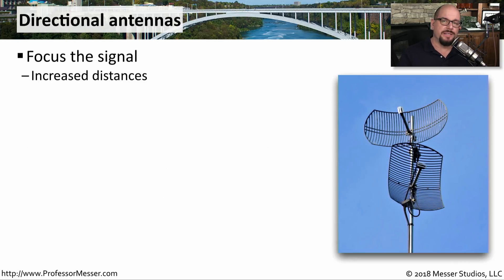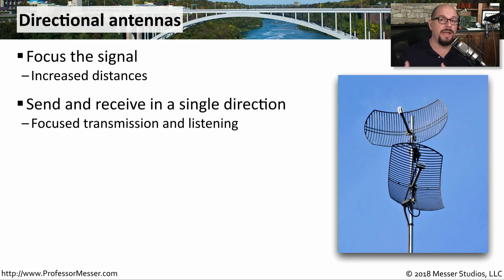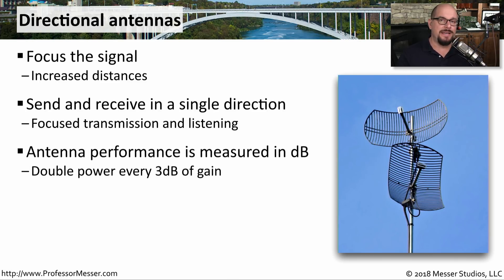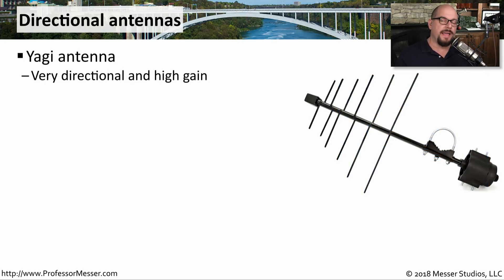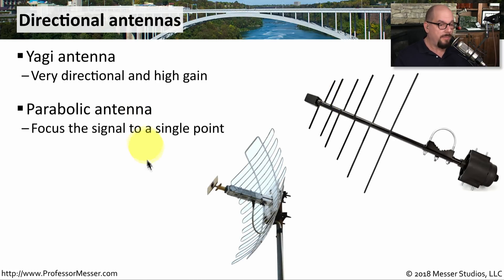A directional antenna focuses the signal in a particular direction — useful for sending information between buildings or providing signal across a hallway. Antenna performance is measured in decibels; doubling the effective power equals 3 dB. One type of high-gain directional antenna is the Yagi antenna, which uses a single antenna with multiple reflectors to focus the signal. Another is the parabolic antenna, which reflects a signal off a curved surface into a single feed horn for a very focused directional signal between two devices.